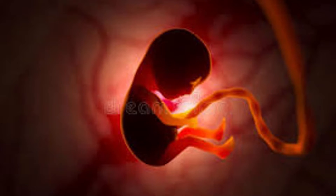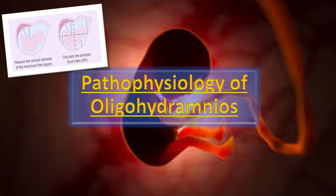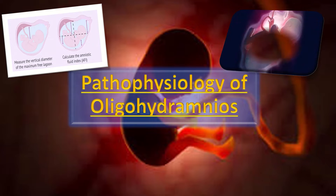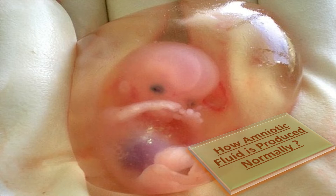Bismillahirrahmanirrahim. Now we will discuss the pathophysiology of oligohydramnios. Amniotic fluid is formed by a specific mechanism in pregnancy. First I will explain how amniotic fluid is formed normally, and then one by one I will clarify how the different causes of oligohydramnios reduce the amount of liquor around the baby. In the top right corner of this video you can find the complete list of videos related to oligohydramnios. So how is amniotic fluid produced normally?